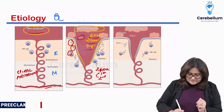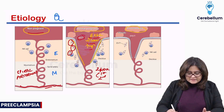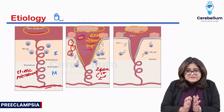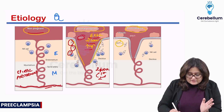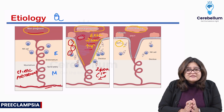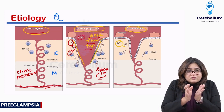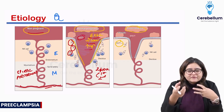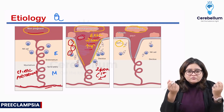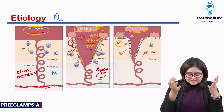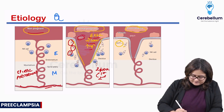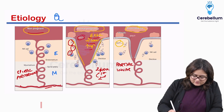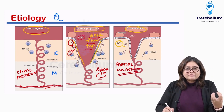In preeclampsia, looking at this preeclamptic arteriole, there is invasion by the extra villous trophoblast but it is very, very less. There is some dilatation but it is not enough. This partial invasion of extra villous trophoblast is the etiology behind preeclampsia developing — there is partial invasion.